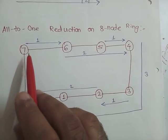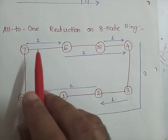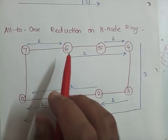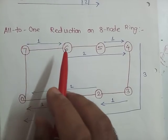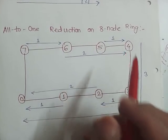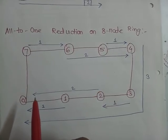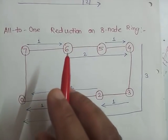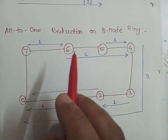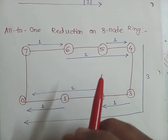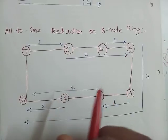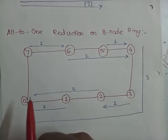So 7 is passing to 6, 5 is passing to 4, 3 to 2, and 1 to 0. So in the second step, the buffer at node 6 is collected at node 4, and buffer at node 2 is collected at node 0.